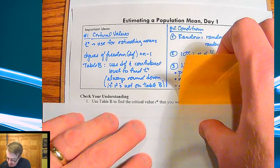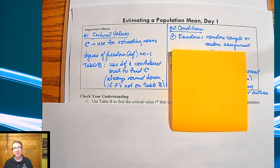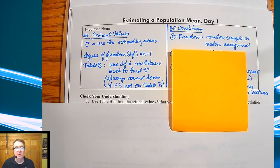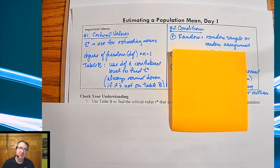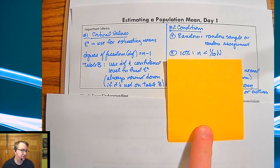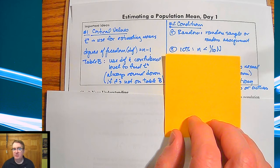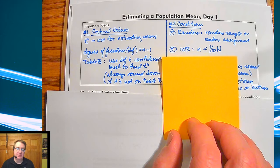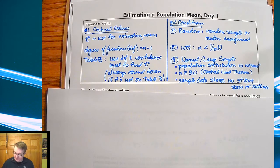Now in terms of the conditions, these won't sound super unfamiliar. First one is random - it's either going to say that you have a random sample, or if you're doing the experiment or the study you need to have a random assignment. Both of those will meet those conditions. Number two, ten percent rule - not super surprising. This is so that we don't have to worry about replacement of items. Your sample always has to be less than 10 percent of the population size.